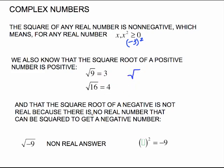Now, the square root of a negative is not real because there is no real number that can be squared to get a negative number. So when we ask you to do the square root of negative 9, which you've said up to now is just a non-real answer, that's because there is no number squared that will give us negative 9.